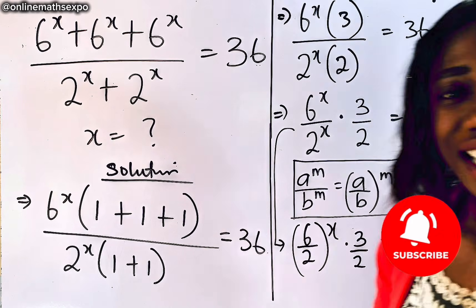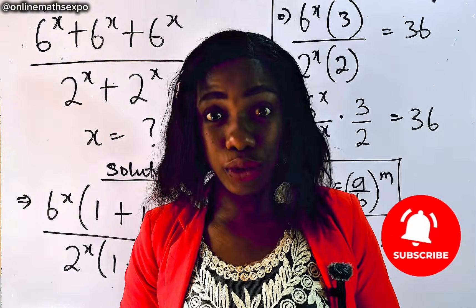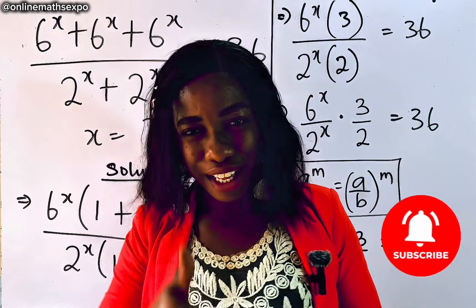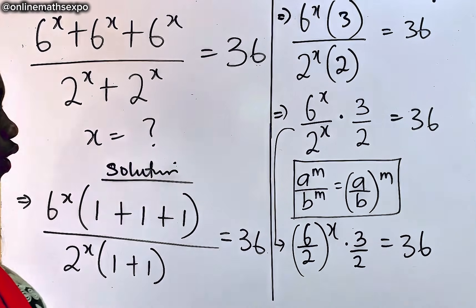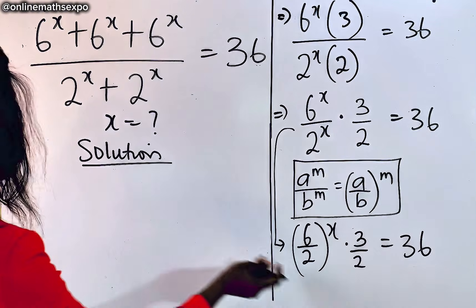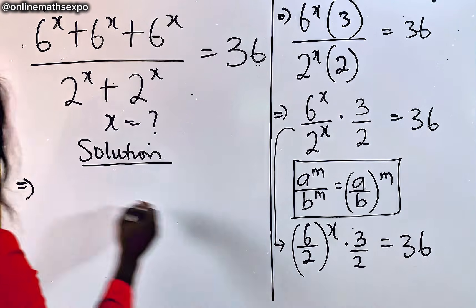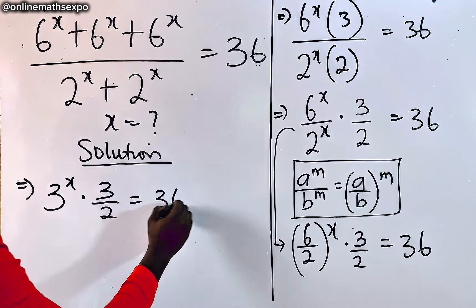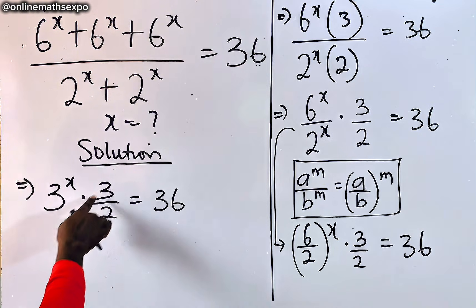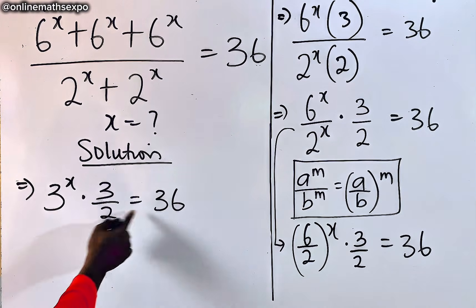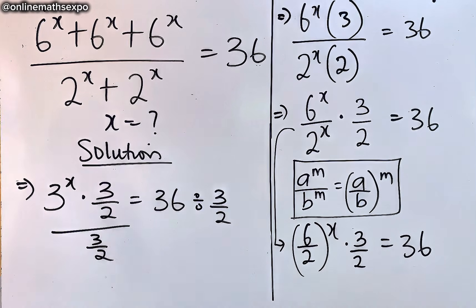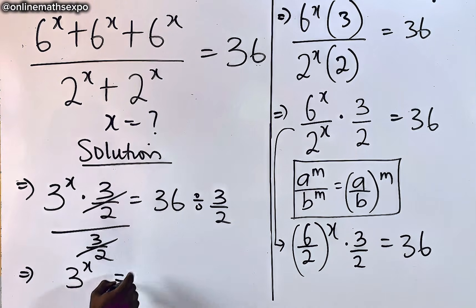We keep simplifying. So from here, dividing 6 by 2 gives us 3, so we now have 3 to the x-power multiplied by 3 halves is equal to 36. We want to remove the 3 halves. Because it's multiplying, we divide both sides by 3 halves — this cancels out, so we now have 3 to the x-power is equal to 36 divided by 3 halves.